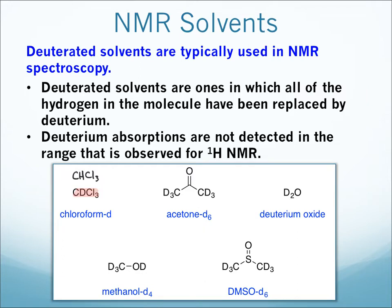There are a few different solvent options: deuterated acetone, the deuterated version of water, deuterated methanol — where both the deuterium on the carbon and on the OH is replaced — and then deuterated DMSO.